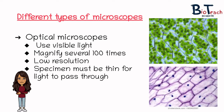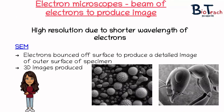I've got some examples of some light micrographs over to the right of your screen. The other type of microscope we have are the electron microscopes. They use a beam of electrons instead of light to produce an image. The higher resolution of these microscopes is due to the shorter wavelength of electrons.